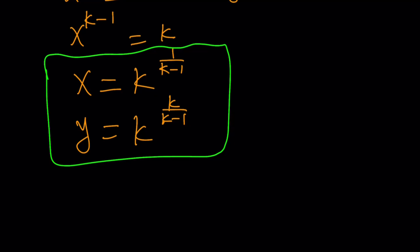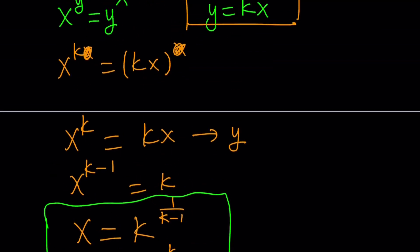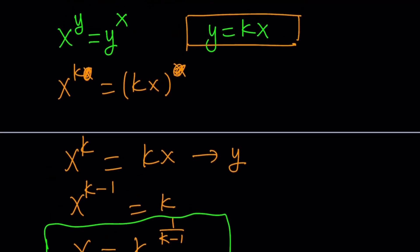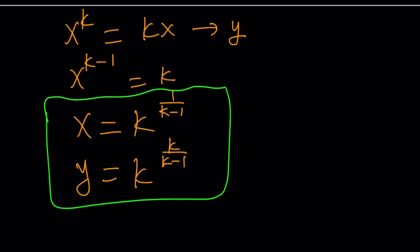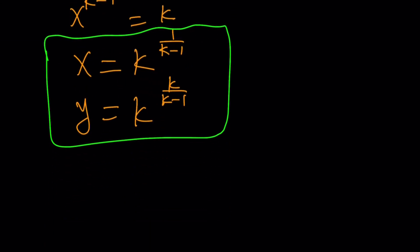But of course, you want to avoid k equals 1, because for k equals 1, we get x equals y, and obviously, x equals y is always going to be satisfied, except for zeros, right? Cool, cool. So from here, you can find infinitely many solutions.